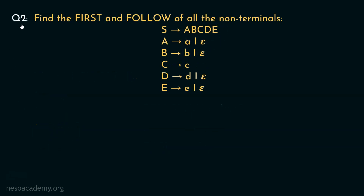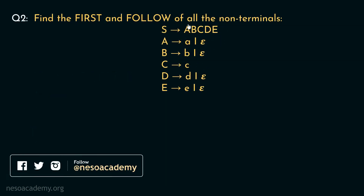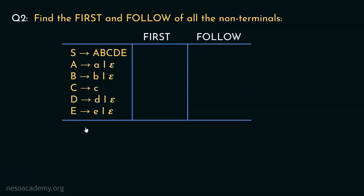Let's now move on to the next question: find the first and follow of all the non-terminals. This is the grammar given, and as you can see, it includes 6 non-terminals. We will take all these non-terminals and eventually find out the first and follow. As observed in the previous session, whenever we try to find out the first of all non-terminals of a given grammar, we should always start off with the last non-terminal in the list. So let's start with E.